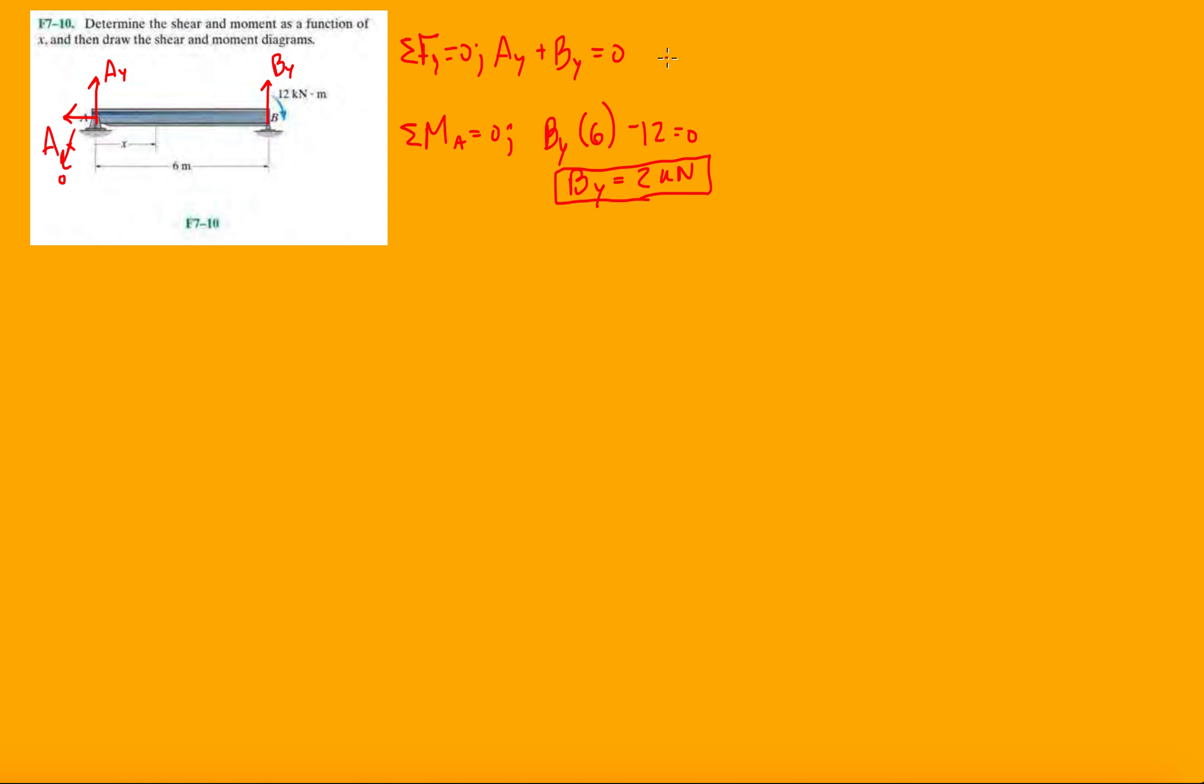Which means AY over there is minus 2 kilonewtons. So, it's actually down, it's pointing down. Okay, that's it.